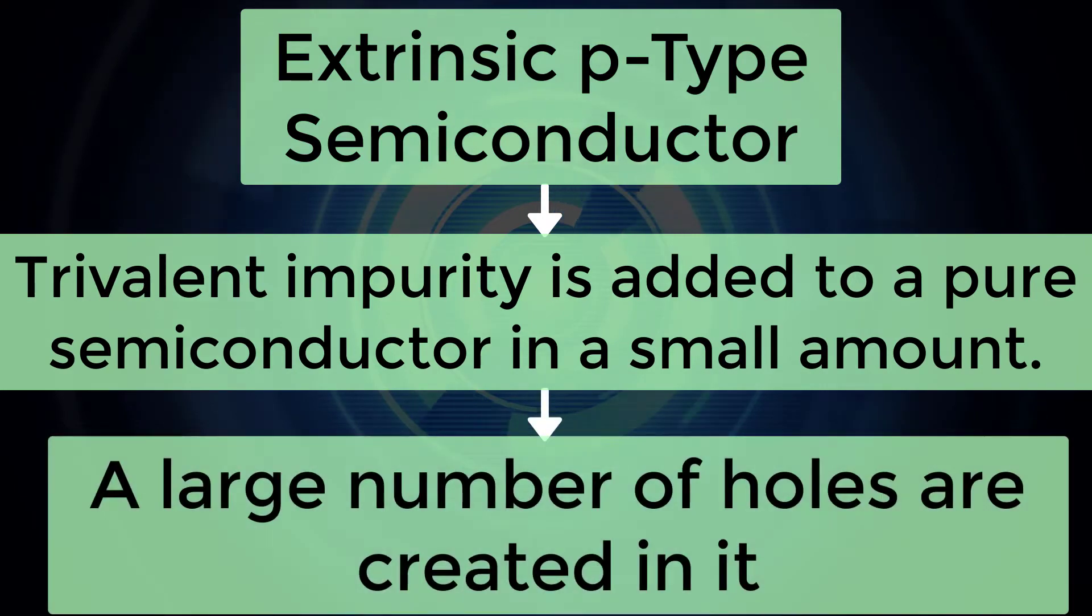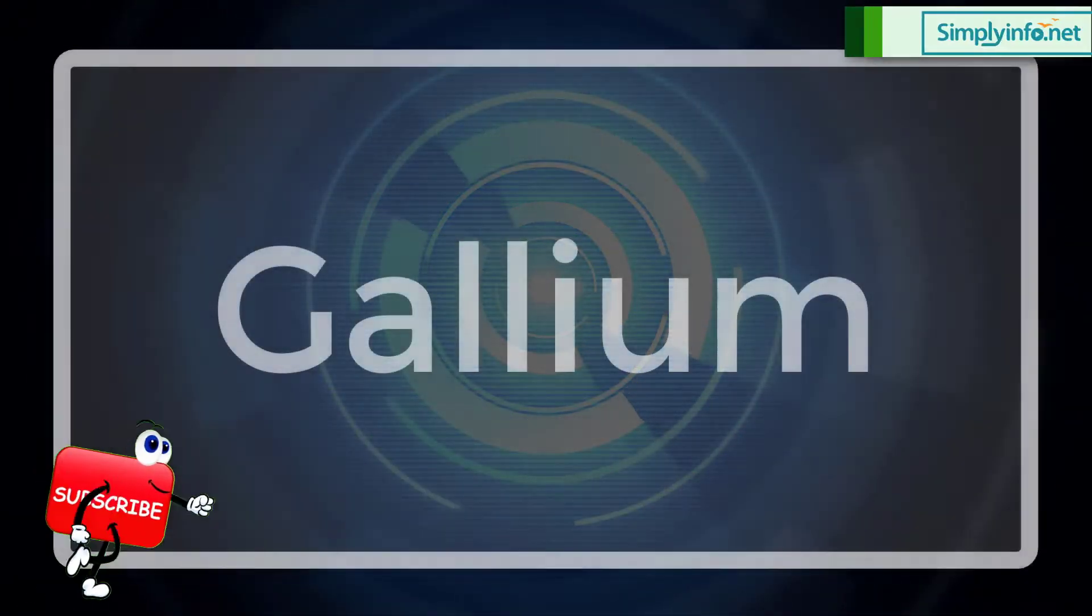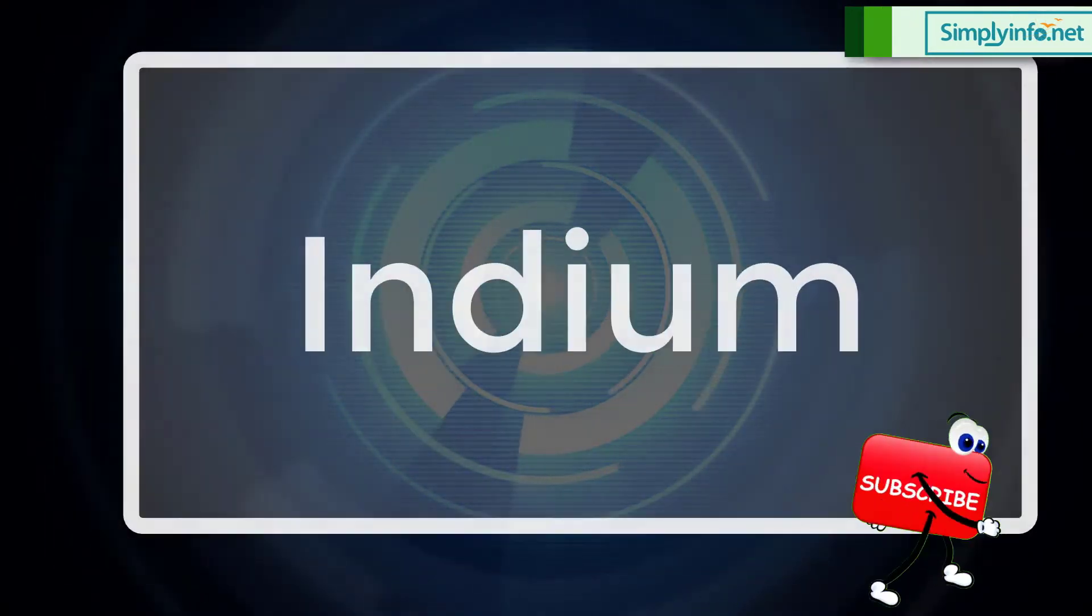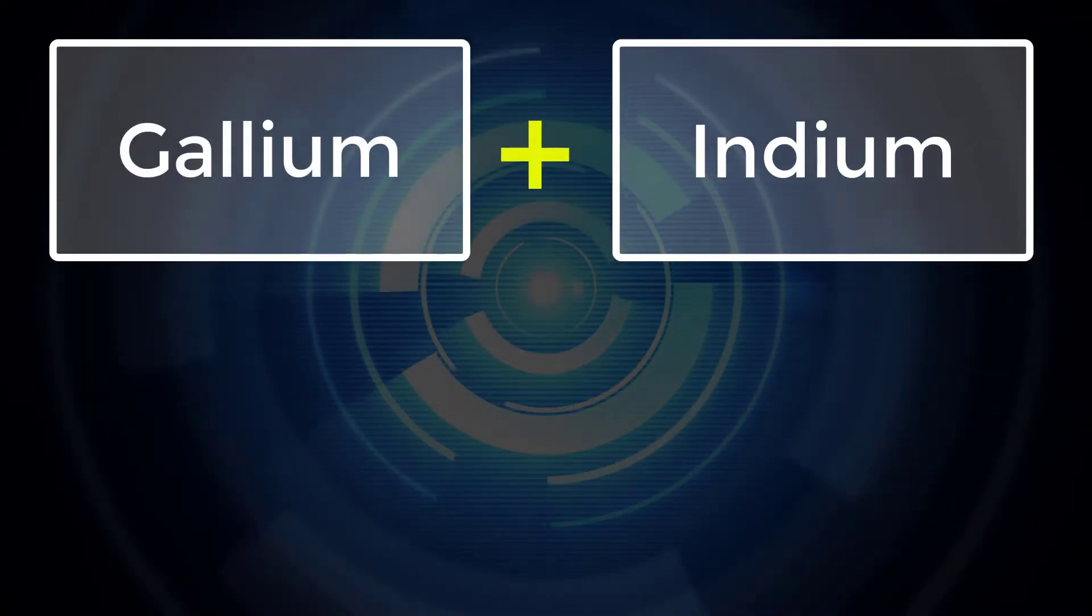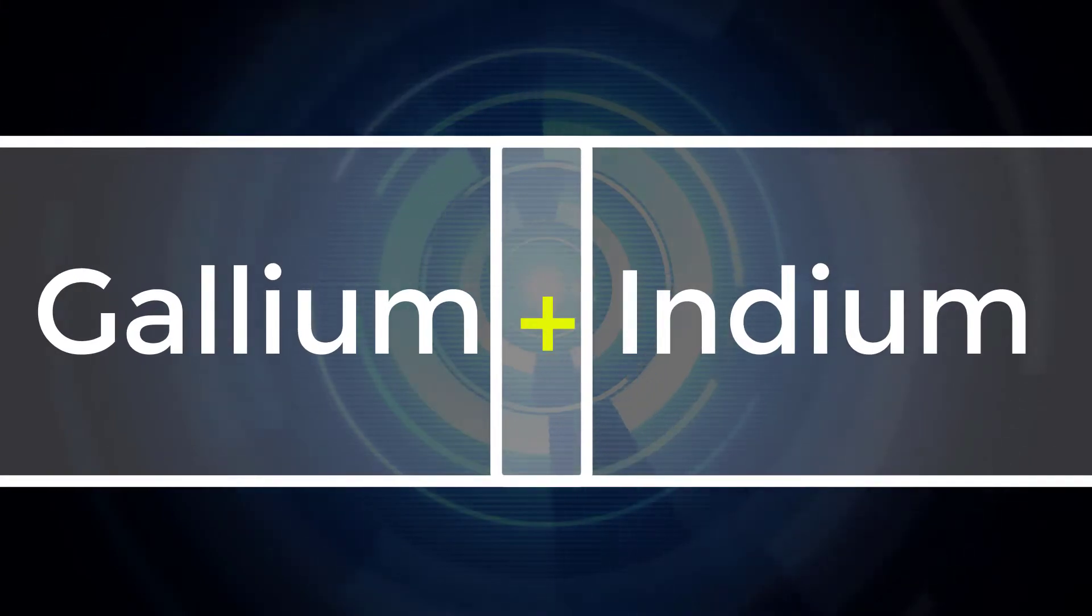And as a result, a large number of holes are created in it. A large number of holes are provided in the semiconductor material by the addition of trivalent impurities like gallium and indium.